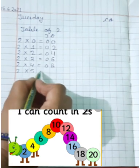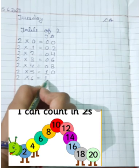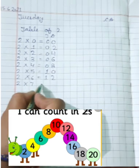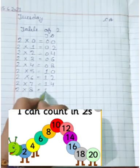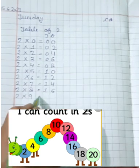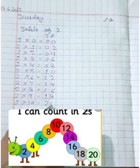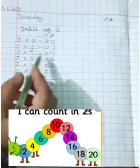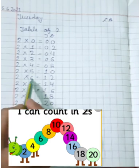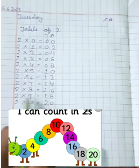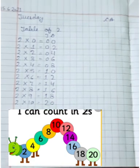2 fives are 10, 2 sixes are 12, 2 sevens are 14, 2 eights are 16, 2 nines are 18, 2 tens are 20. 2 zeros are 0, 2 ones are 2, 2 twos are 4, 2 threes are 6, 2 fours are 8, 2 fives are 10, 2 sixes are 12, 2 sevens are 14, 2 eights are 16, 2 nines are 18, 2 tens are 20.